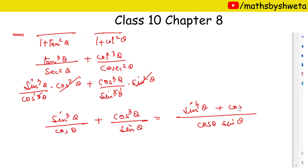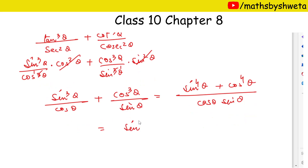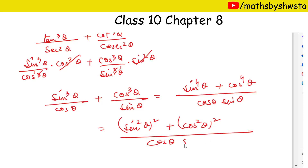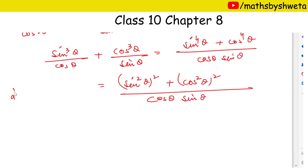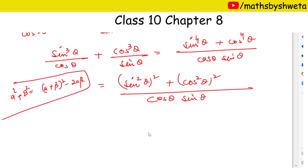We have sin⁴θ and cos⁴θ. I have split this as sin²θ whole square and cos²θ whole square. Now I apply the a² + b² identity, that is a plus b whole square minus 2ab. So we get sin²θ plus cos²θ whole square minus 2ab.